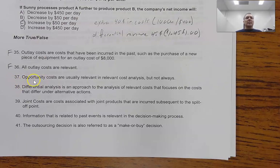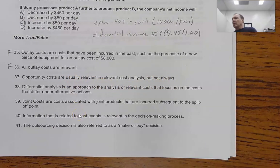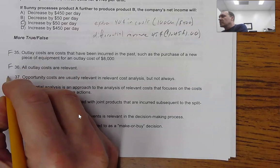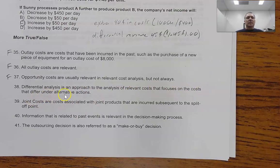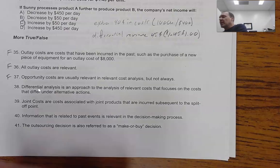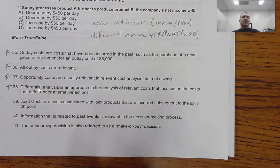Question 37 says: 'Opportunity costs are usually relevant in relevant cost analysis, but not always.' They actually messed this up, because opportunity costs are always relevant. Question 38: 'Differential analysis is an approach to the analysis of relevant costs that focuses on the costs that differ among alternative actions.' This is precisely what we've talked about — we can't do differential analysis unless we have some type of a difference. This is absolutely a true statement.